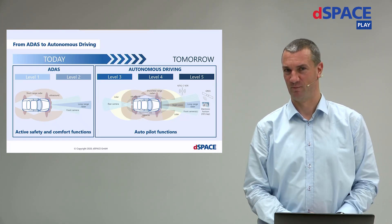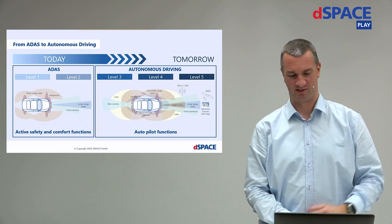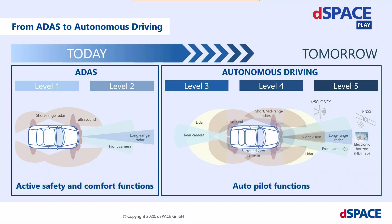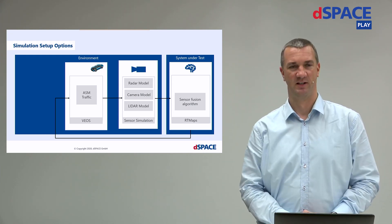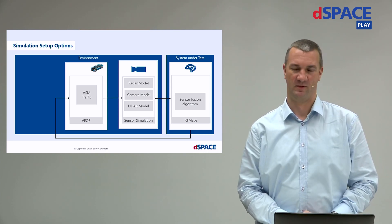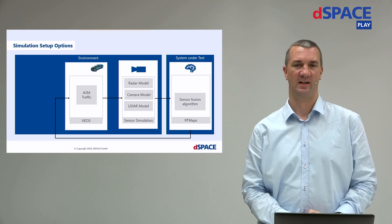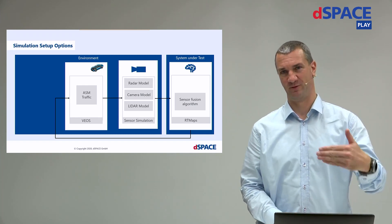Let's talk about another example. Modern cars have many sensors observing their surroundings, used for functions like adaptive velocity control or emergency braking. In the future, we will have cars that can drive without a human driver. Before these functions can be used in the real world they have to be simulated first. In a SIL testing scenario, you can use your system under test — for example, a sensor fusion algorithm running in RTMaps — connected to ASM traffic simulation. In addition, you have to simulate all the sensors: radar, camera, lidar, and so on.